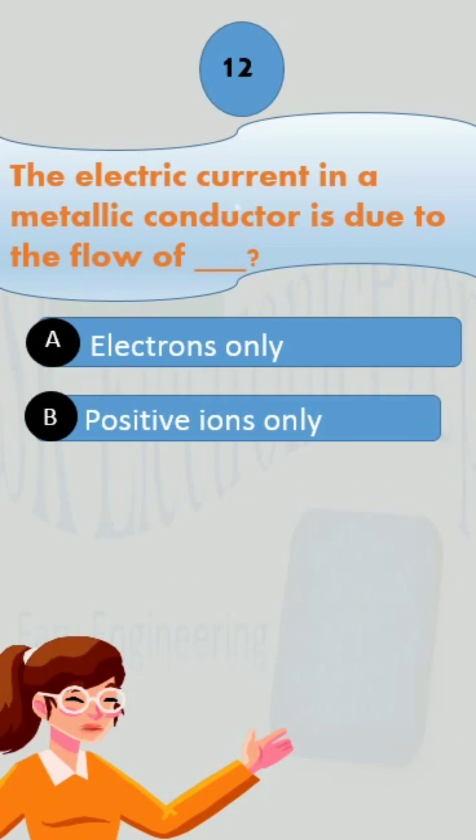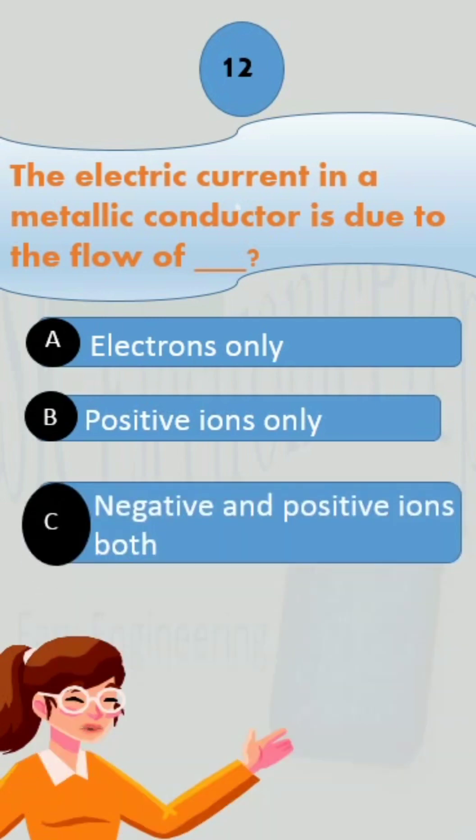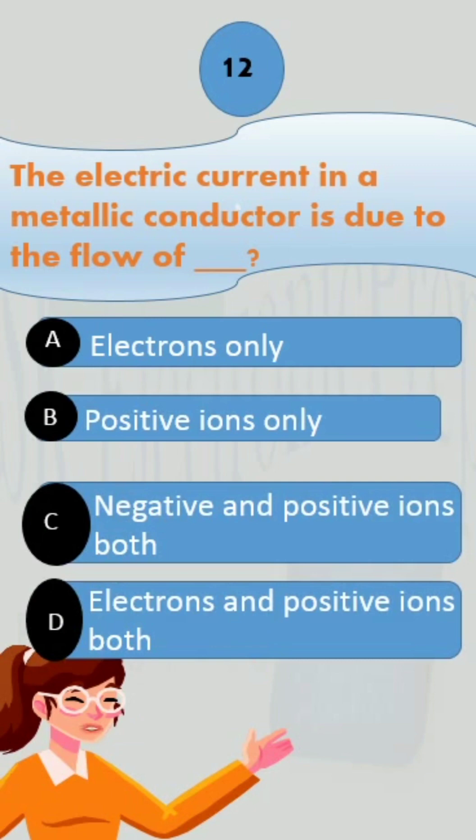option B, positive ions only, option C, negative and positive ions both, D, electrons and positive ions both.